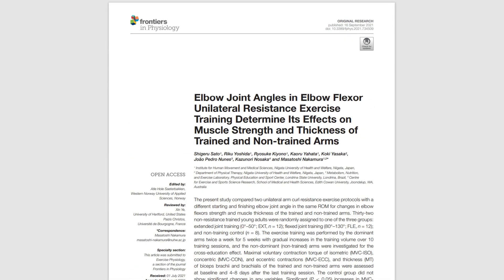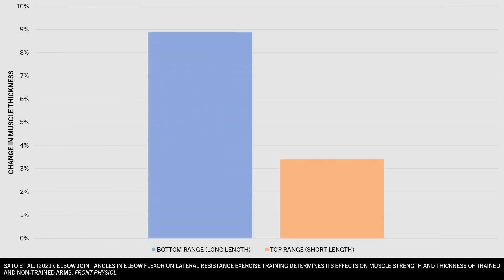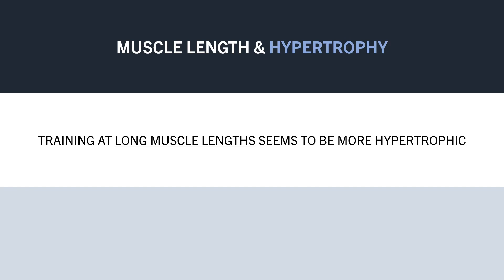The other study explored the effects of partial range of motion training for the biceps at either a long or short muscle length. One group performed partial preacher curls in the top portion of the lift where the biceps are shortened, and the other group performed partials at the bottom portion where the biceps are more lengthened. As we can see, the group training at a longer muscle length saw superior muscle growth of the biceps compared with training at a shorter length. Taking these two studies together, it suggests that training a muscle at long lengths seems to be superior to training at short lengths.